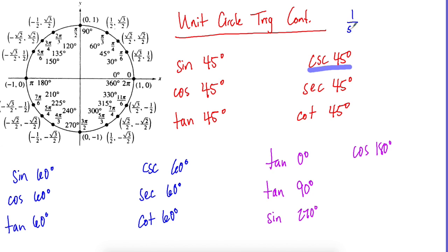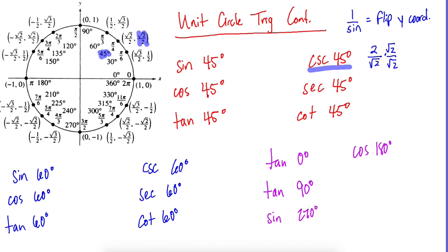Cosecant is 1 over sine, which means you flip the y-coordinate. If we go to 45 degrees, the y-coordinate is √2/2. Since it's cosecant, we flip it to 2/√2, then rationalize the denominator. We get 2√2/2, the 2s cancel, and we're left with just √2.